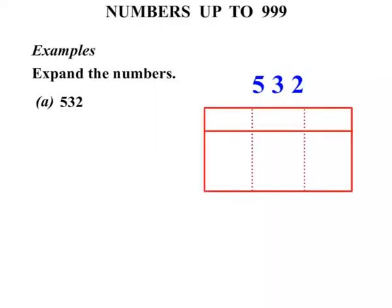Moving on to some further examples. We need to expand the numbers. In part A. Five hundred and thirty-two. Let's just write this over here. Bit of working space. And let's look at the columns again. Ones. Tens. Hundreds. Now the two is in the ones column. The three is in the tens column. And the next number five is in the hundreds column. So we're going to use this to help us expand the number.